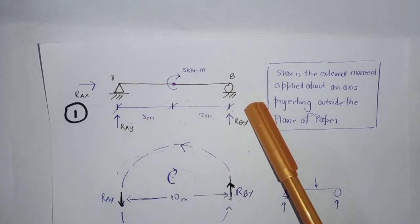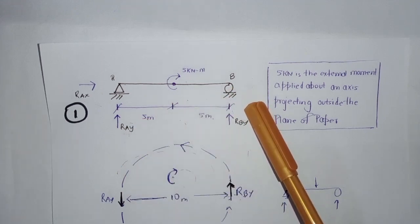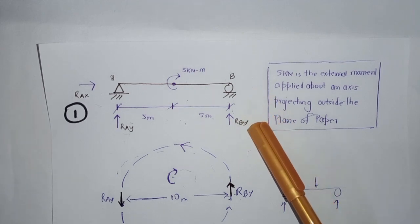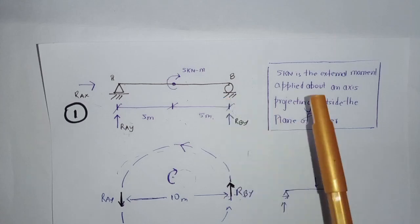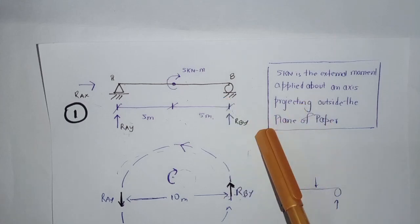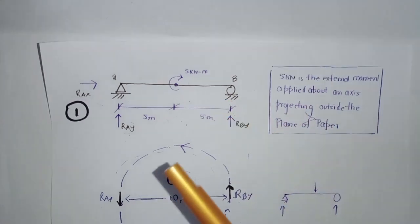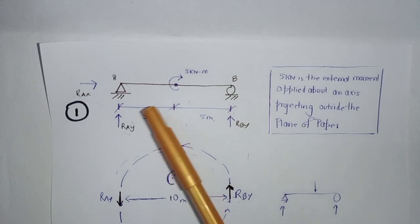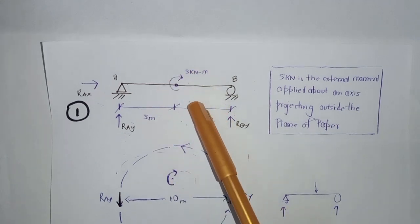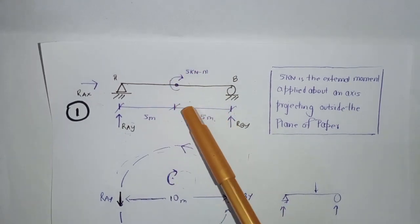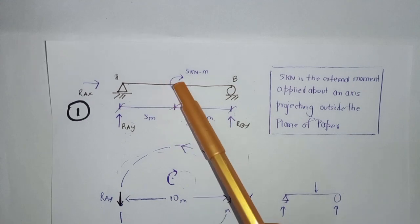It really doesn't matter what direction you choose — in the end, you'll get the same answer no matter what. At point B, we have a roller support. A roller support is a support which resists forces only in the vertical direction, represented by RBY. Let's also assume that this force is acting in the upper direction. If you look a bit closer, you can see that this 5 kNm moment is producing a clockwise rotational effect on the beam.